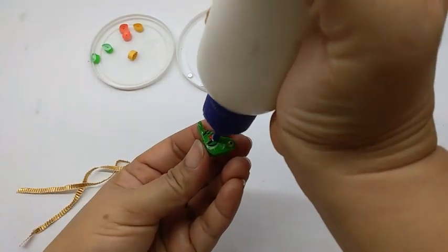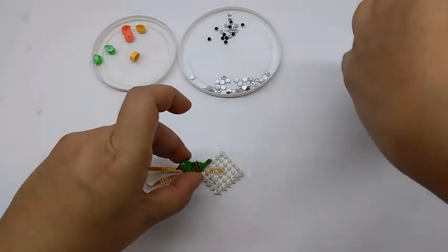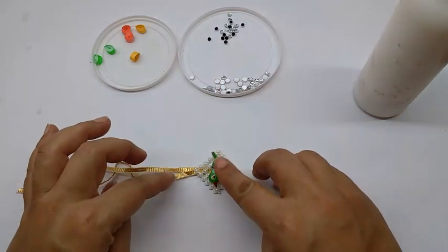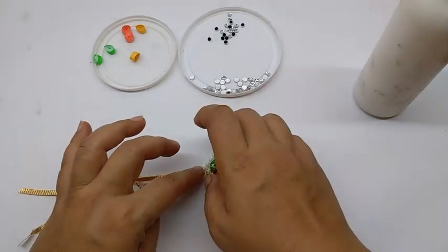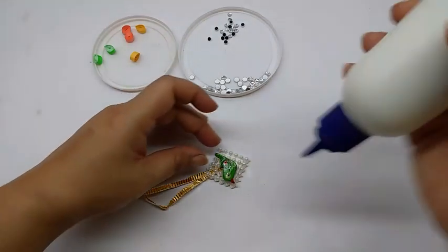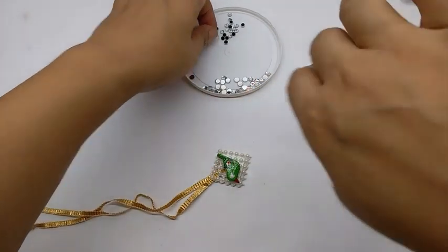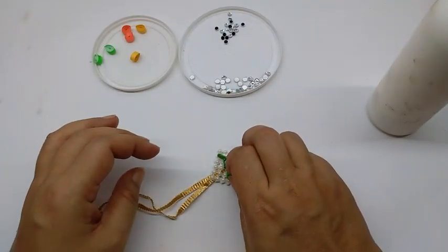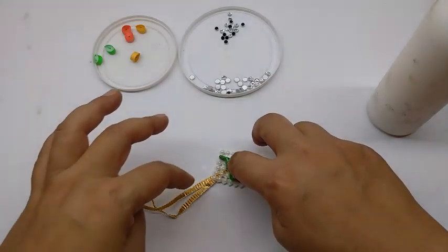Now on this side, take the parrot. And as we did for the rakhi, same way apply glue on it. And this is going to hang this way, so I will stick the parrot like this. You need to leave it for a little while. Before that I will just stick the eye also. So I will just leave it to dry.